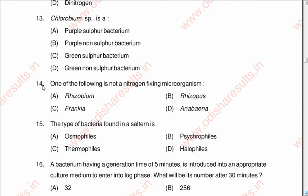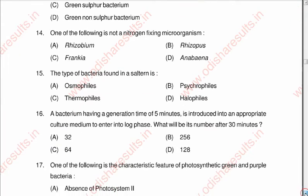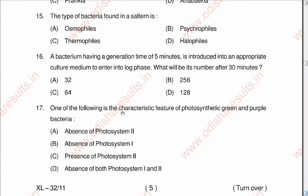Question fourteen: One of the following is not a nitrogen-fixing microorganism. A: Rhizobium, B: Rhizopus, C: Frankia, D: Anabaena. The correct answer is B: Rhizopus, which is the bread mold fungus, not a nitrogen-fixing bacterium.